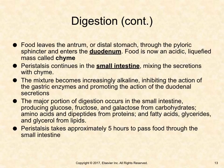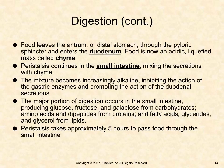Food leaves the antrum, or distal stomach, through the pyloric sphincter and enters the duodenum. Food is now an acidic, liquefied mass called chyme. Peristalsis continues in the small intestine, mixing secretions with chyme. The mixture becomes increasingly alkaline, inhibiting gastric enzymes and promoting duodenal secretions. The major portion of digestion occurs in the small intestine, producing glucose, fructose, and galactose from carbohydrates; amino acids and dipeptides from proteins; and fatty acids, glycerides, and glycerol from lipids. Peristalsis takes approximately 5 hours to pass food through the small intestine.